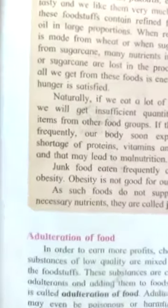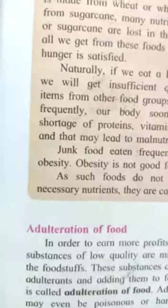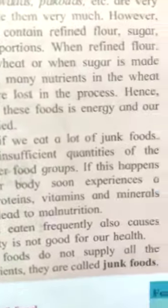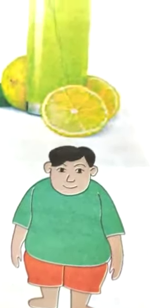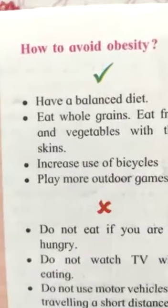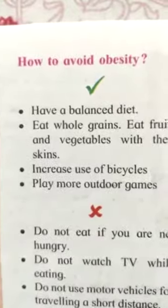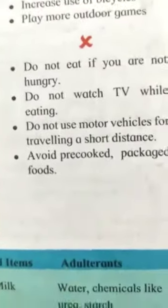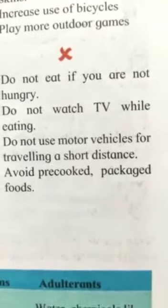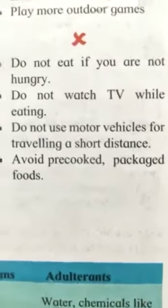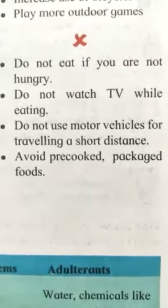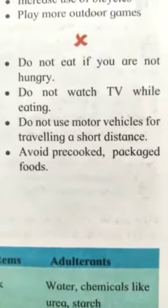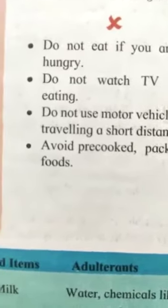Junk food includes chocolate, pizza, burger, pasta, Maggi and noodles. Due to junk food, obesity increases and we become overweight. To avoid obesity: have a balanced diet, eat whole grains, eat fruits and vegetables, use bicycles, and play more outdoor games. Do not eat if you are not hungry, do not watch TV while eating, do not use motor vehicles, go walking or cycling, avoid pre-cooked packaged foods, and avoid fried foods like kurkure and chips.